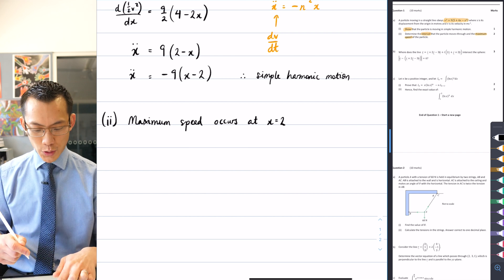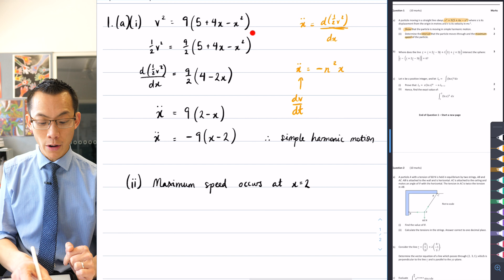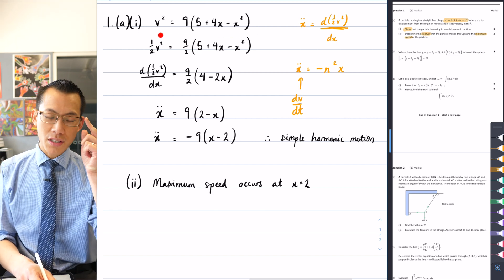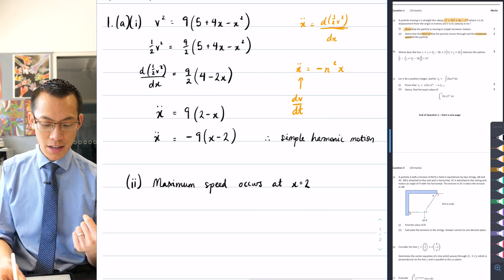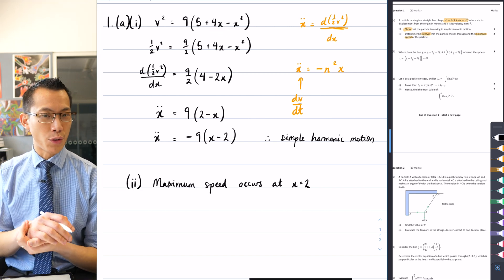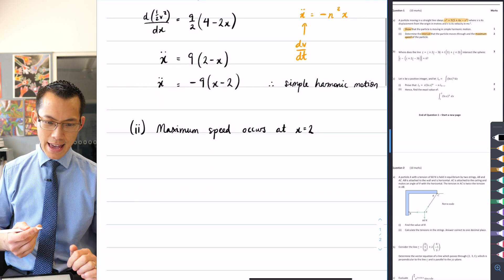The reason why that's useful is because you can go back to the very first expression that we were given here, or equation I should say, which is the velocity in terms of the displacement. So I can just put x equals 2 into here, do a straight substitution, and that will give me a result that will help me get speed.